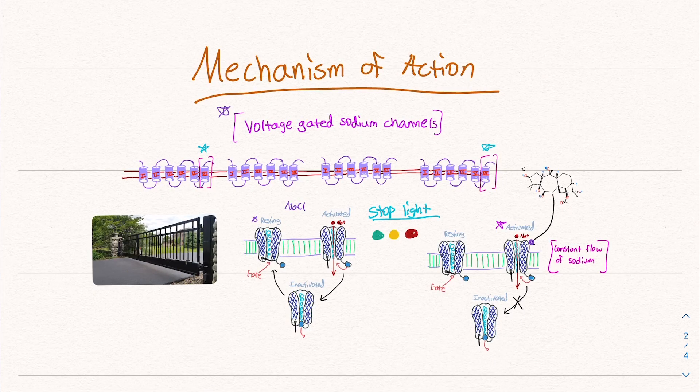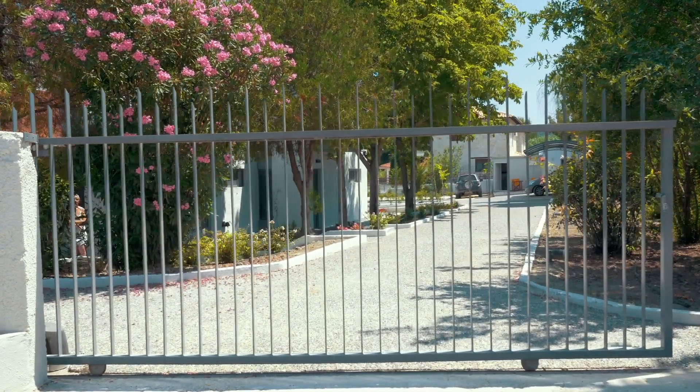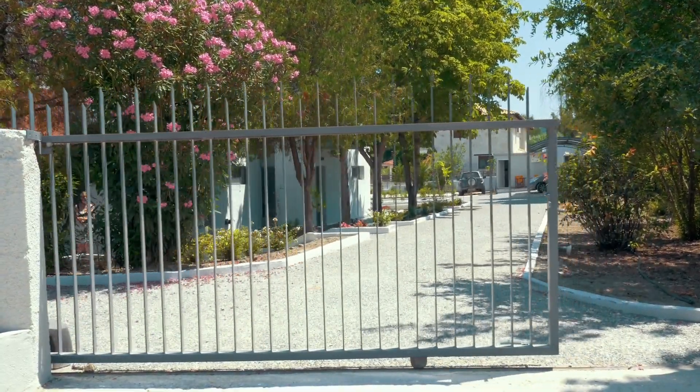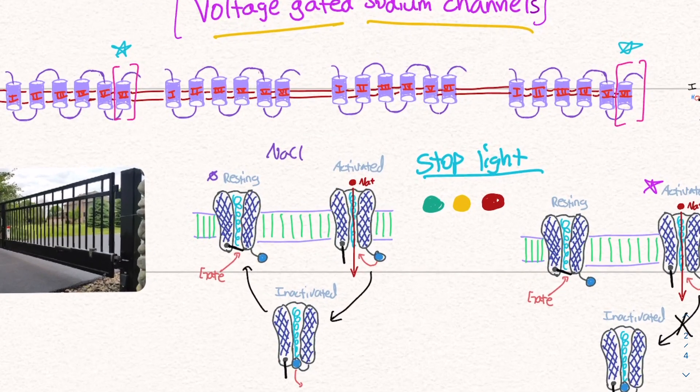How do these toxins work? In our body, we have all kinds of structures that allow things to move in and out. In this case, we have these things called voltage gated sodium channels. Think about an electric gate to a house or an apartment. Most of us have gone through these. Usually they let one car in at a time. This is similar to how these channels work.